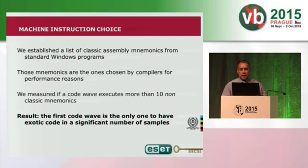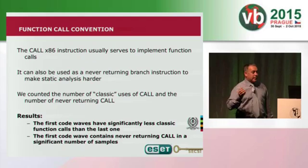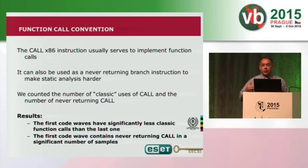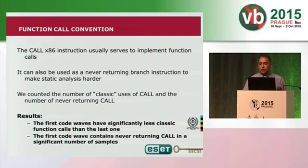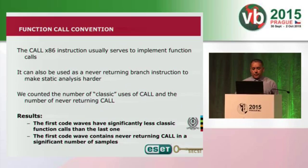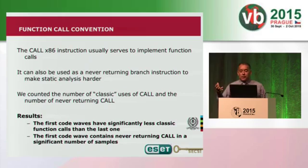All of those obfuscation techniques — throwing nails in the road of the reverser — were only present in the first wave. Another telltale sign is the unconventional use of the call mnemonic. Normally, call is for calling a subroutine and ends with a ret returning to the next instruction. In malware, call is often used to jump around the program without ret instructions, to obfuscate disassemblers. We counted in each wave how many calls were unconventional — not followed by a ret — and this unconventional use was only prevalent in the first wave.